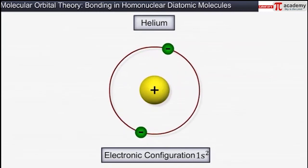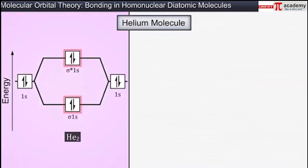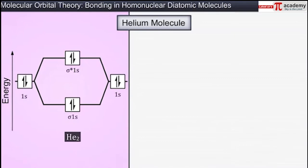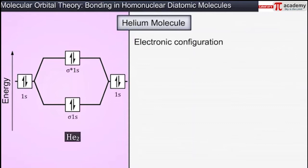A helium atom has two electrons in its 1s orbital, hence the number of electrons in a helium molecule is equal to 4. These electrons occupy the sigma 1s and sigma star 1s molecular orbitals. Hence the electronic configuration of a helium molecule is sigma 1s² sigma star 1s².